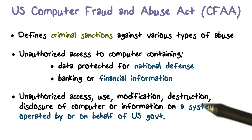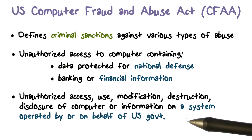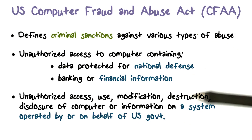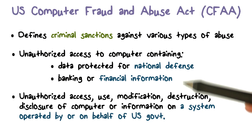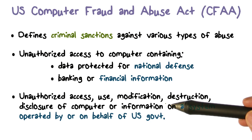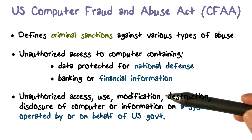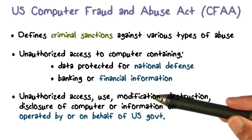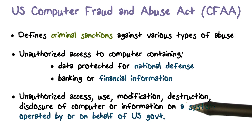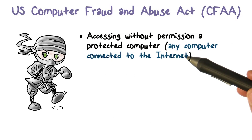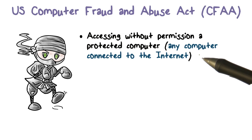If all of this is done when the system under consideration happens to be a government system, that's how the CFAA started. The law covers unauthorized access to information, modification, using that information in any shape or form, destroying it, and affecting availability. Initially it applied to systems operated by or on behalf of the US government — including contractors — but this was then broadened to include any computer.